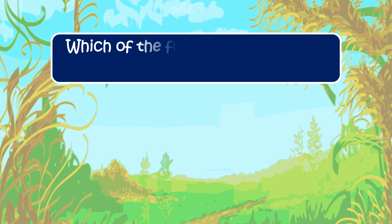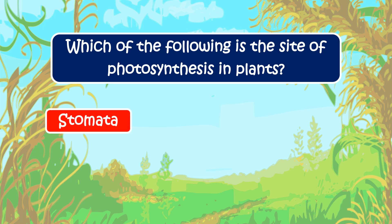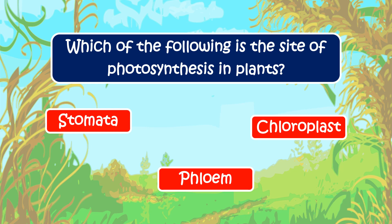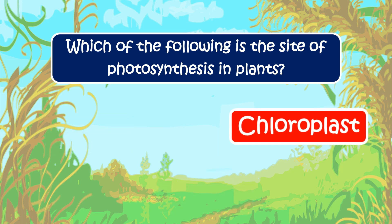Here's the next question: which of the following is the site of photosynthesis in plants? Your options are stomata, phloem, or chloroplast. The right answer is chloroplast.